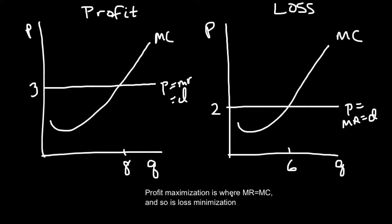When marginal revenue is less than marginal cost — here marginal revenue is still three dollars but marginal cost has gone above three dollars — we're losing money on that unit, which means we've begun to shrink our profits. So there's our profit maximization.